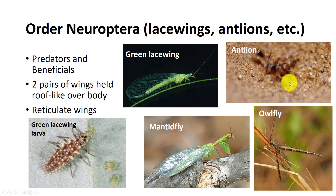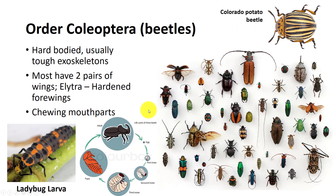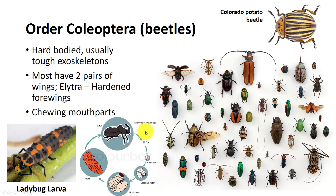Antlions bury themselves completely out of sight and ambush prey from pits in the soil. Beetles are in the order Coleoptera, the largest order of insects with about 40% of all known insects. Their front pair of wings are hardened into wing cases called elytra, distinguishing them from most other insects. It forms a protective cover for hindwings when the insect is not in flight. They are holometabolous, and the larvae are referred to as grubs.